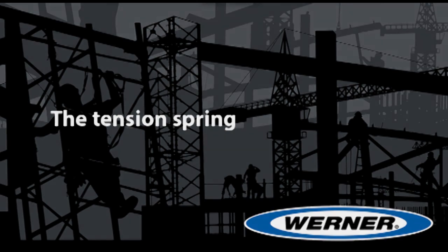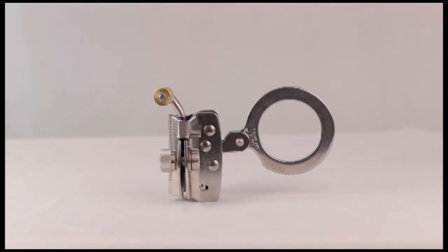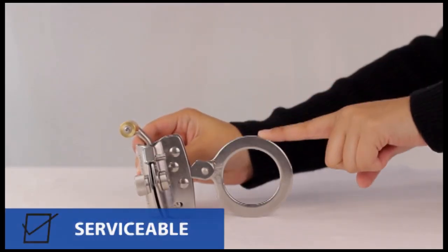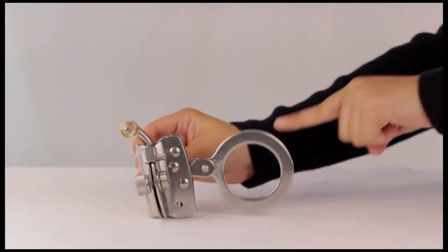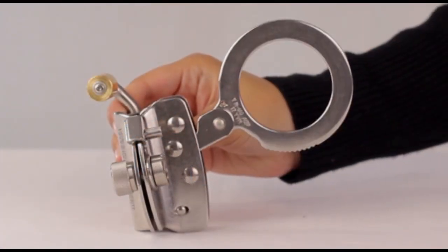The Tension Spring. First, place the rope grab onto a flat surface with the arrow pointing down. Push down on the ring. The ring should return to its original position. This indicates a working tension spring.